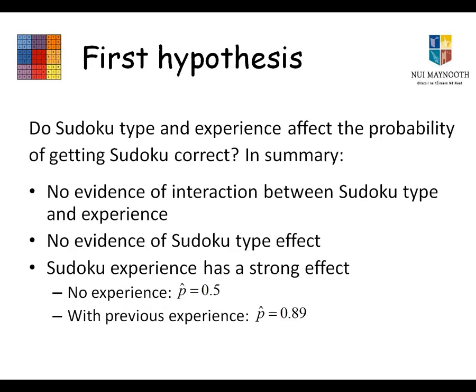To summarize the findings for the first hypothesis: no evidence of an interaction between Sudoku type and experience, and no evidence of an effect of Sudoku type — so whether you've got Greek letters, numbers, or symbols doesn't impact whether you'll get the Sudoku correct. However, previous Sudoku experience does have a strong effect. Those with no previous experience had an estimated probability of getting it correct of 0.5, while those with previous experience had an estimated probability of 0.89 — quite a difference between the two groups.